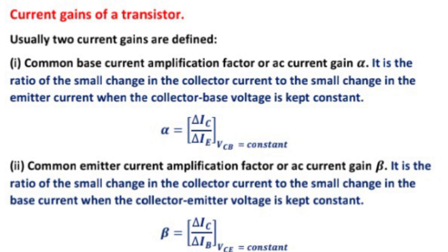Second is common emitter current amplification factor, also called AC current gain beta. Beta is defined as the ratio of the small change in the collector current to the small change in the base current when the collector emitter voltage is kept constant. Beta equals delta IC upon delta IB at constant VCE. And alpha equals beta upon 1 plus beta.